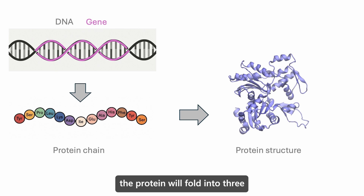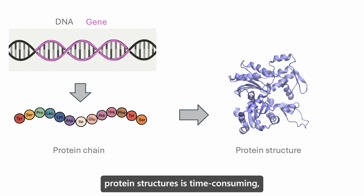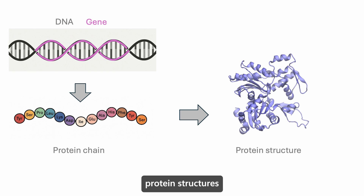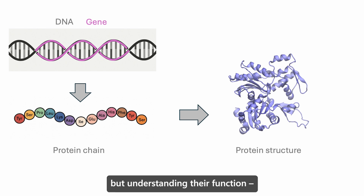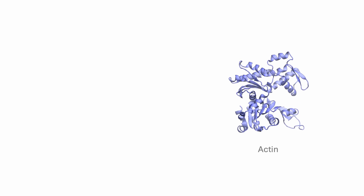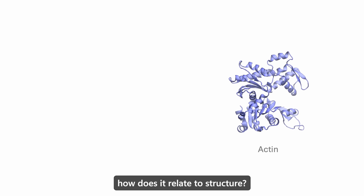Depending on the amino acid code, the protein will fold into three-dimensional structures. Experimentally determining protein structures is time-consuming, but with the AlphaFold breakthrough, protein structures can now be accurately predicted. So we now have a scalable way to determine protein sequence and structure, but understanding their function — how they work — remains a challenge. What is protein function and how does it relate to structure?